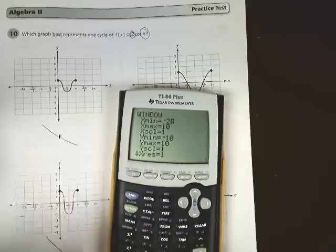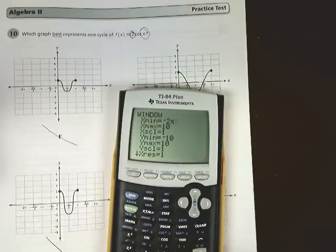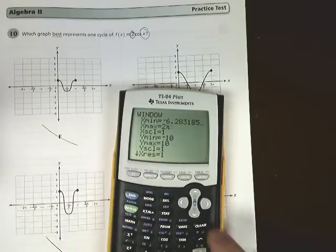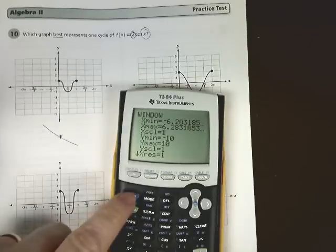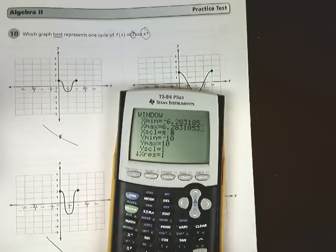Then we go to x-max, which is going to be 2π. For the scale, we notice it's π/2, so we do π divided by 2.